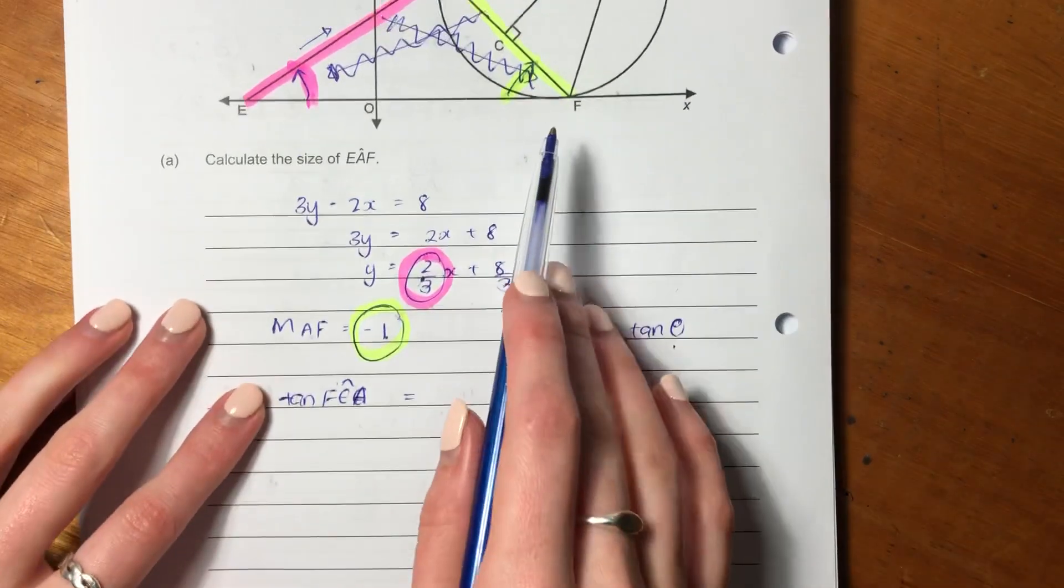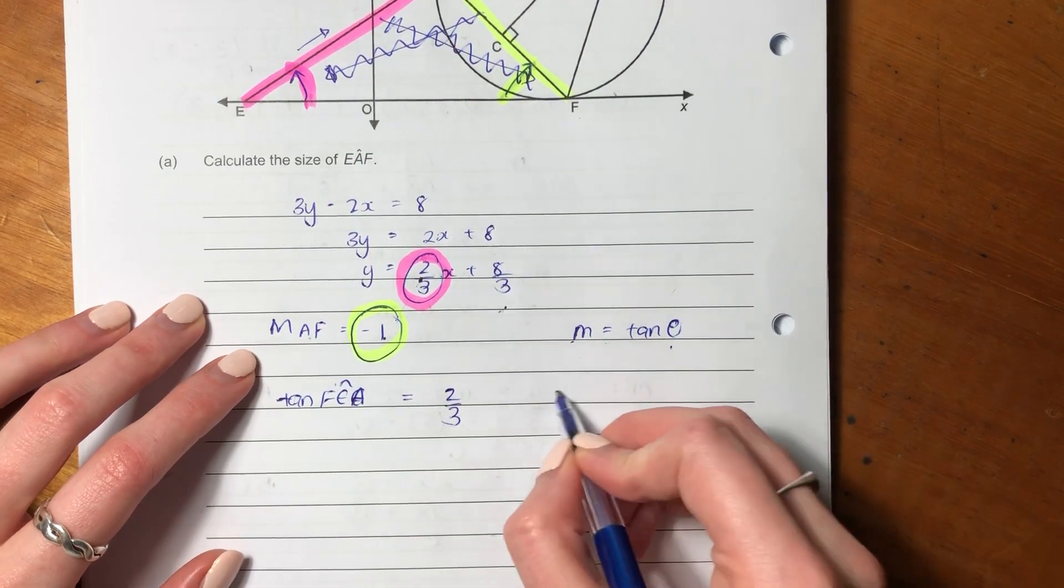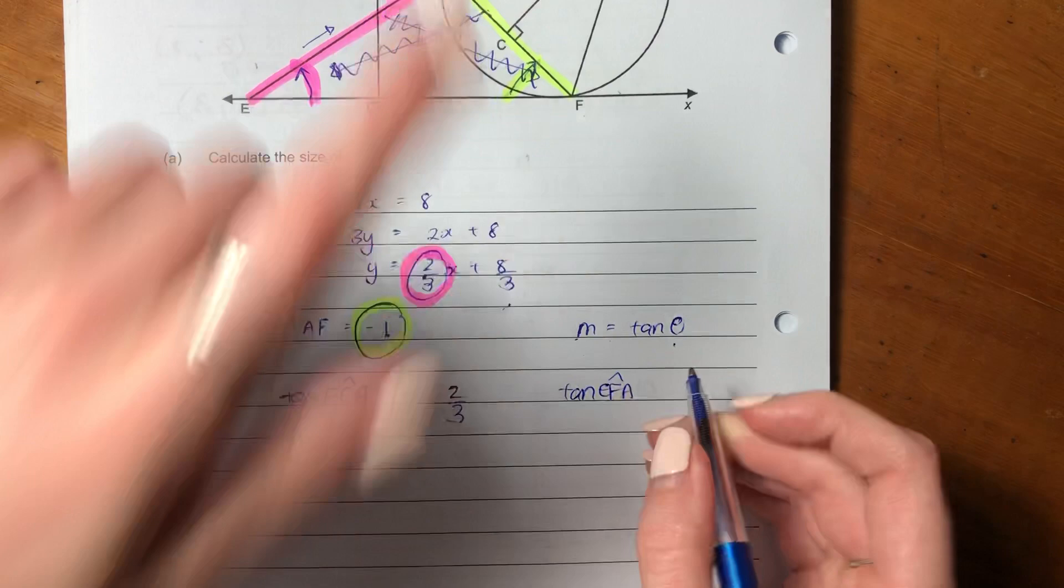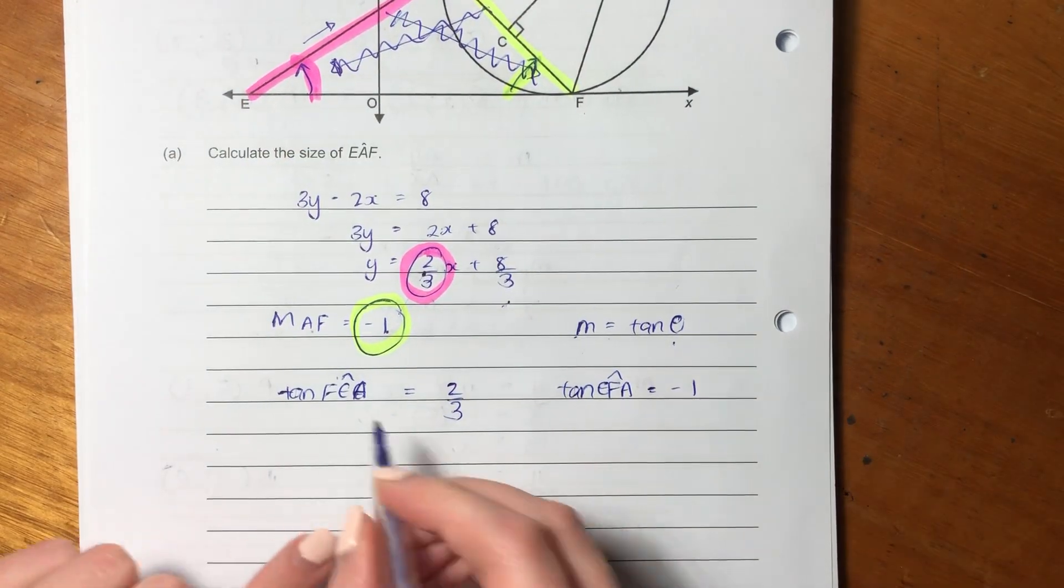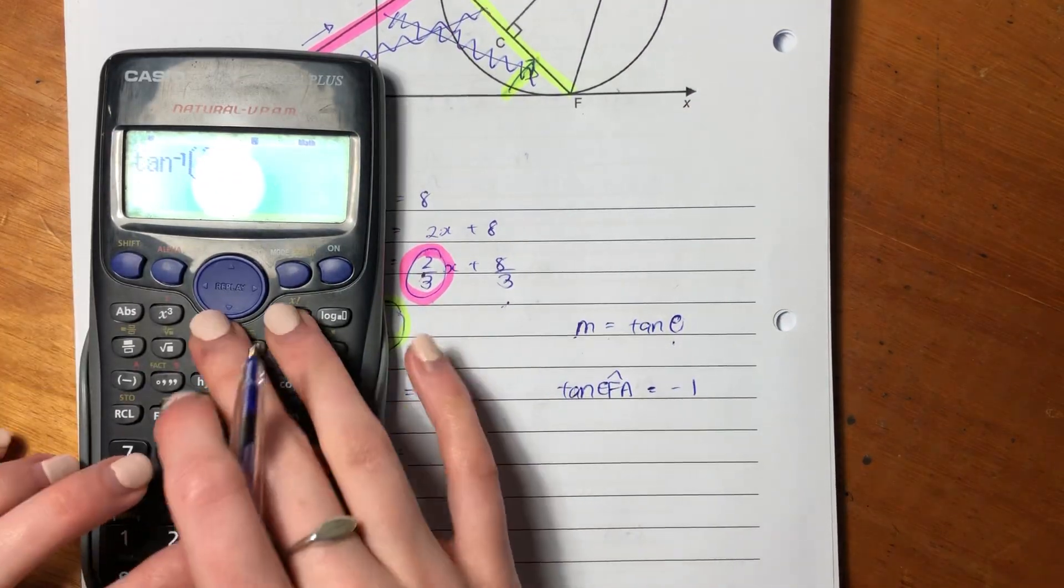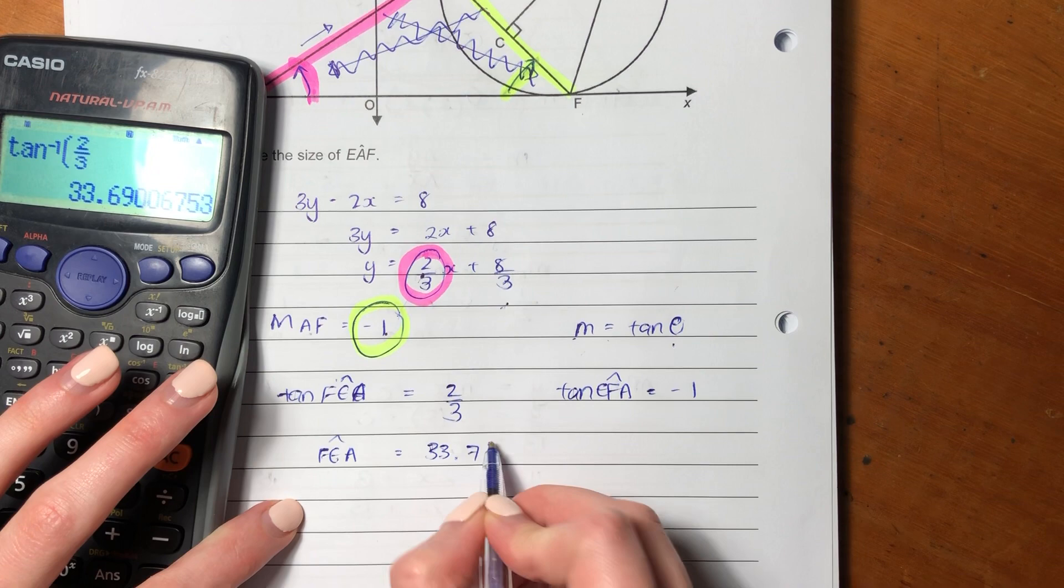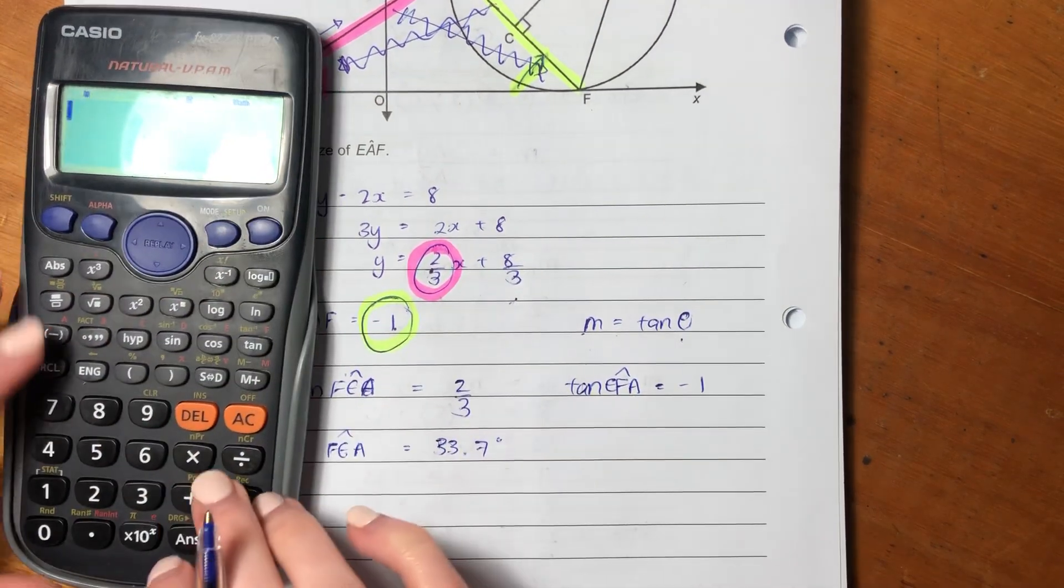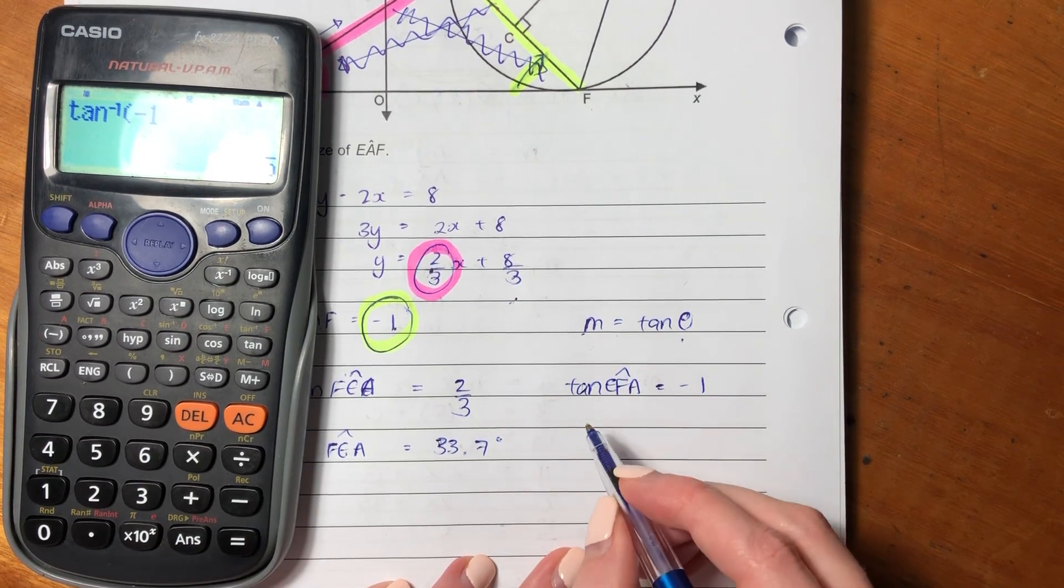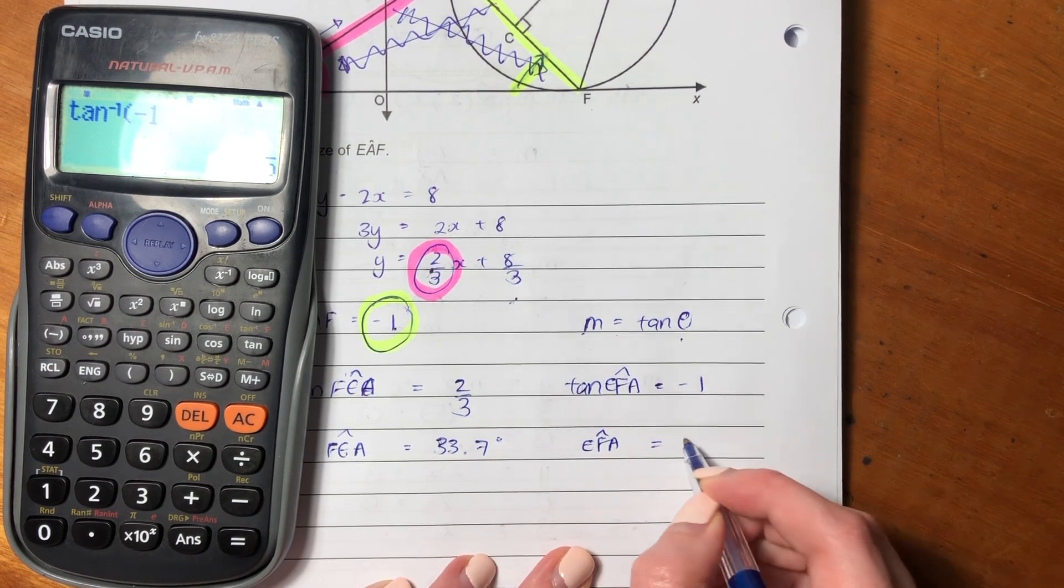So I'm saying tan of FEA equals 2/3, and tan of EFA equals negative 1. So let's figure out what each of these angles is. Inverse function of tan, so FEA equals that. And my other one equals 45 degrees. EFA is going to equal 45 degrees.